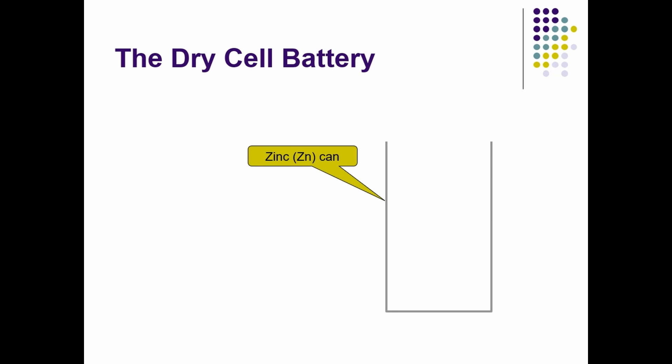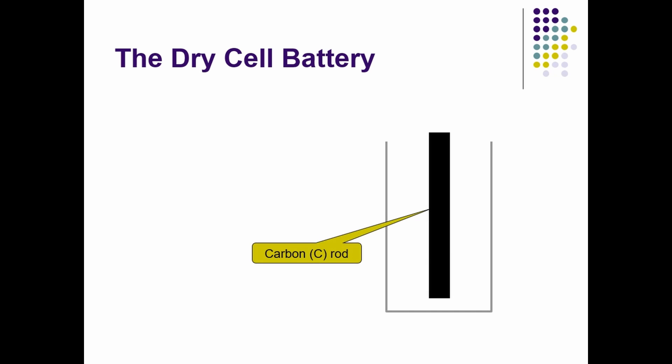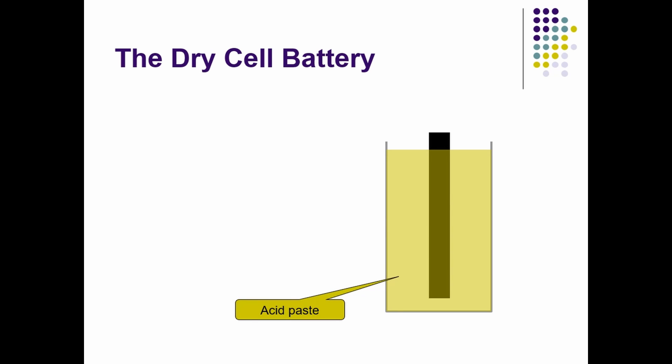We start with a zinc can. We then insert a carbon rod in such a manner that the rod does not touch the can itself. In the space between the rod and the can, we fill in with an acid paste. Finally, we drop a lid in place that seals the paste in the can.